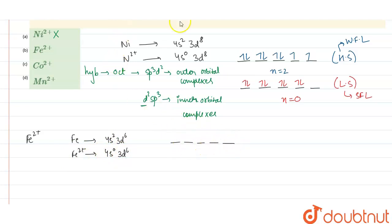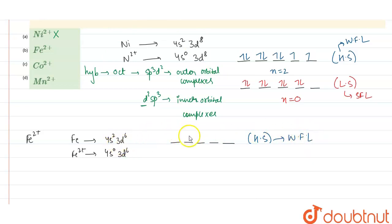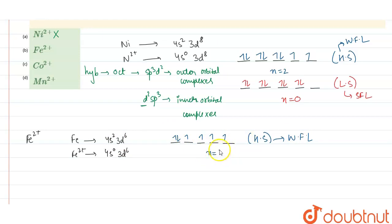For the high spin complex, formed by weak field ligands, we have 6 electrons. Filling them: 1, 2, 3, 4, 5, and 6. The number of unpaired electrons is 4.